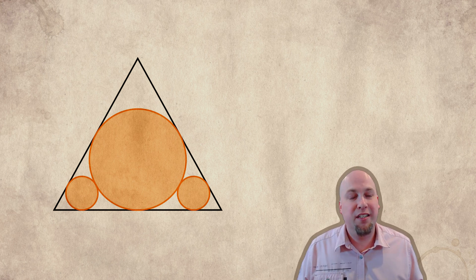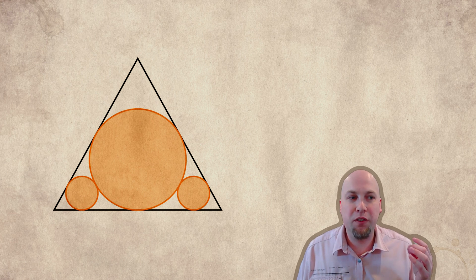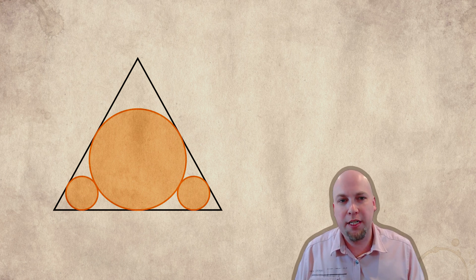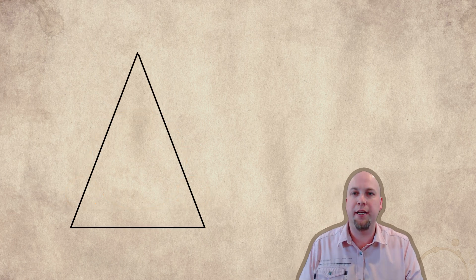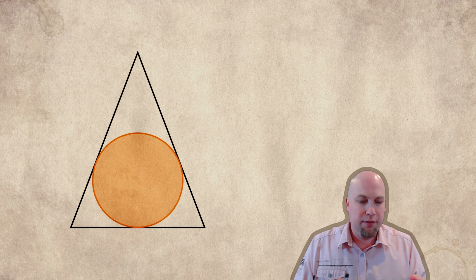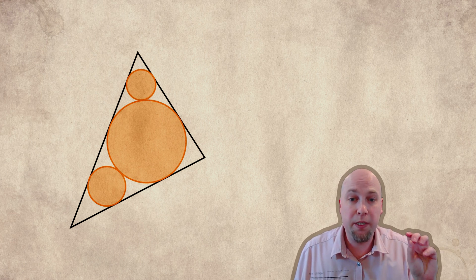And it turns out this greedy method here gives you the right answer no matter what triangle you're trying to do this with. It's not specific to equilateral triangles. So you can have a triangle that's isosceles or just any old scaling ugly triangle. It's still going to work. You just place your first circle as large as you can inside that triangle, then place your second circle as large as you can with the leftover space, and then third circle as large as you can with that leftover space, and you're always going to get the maximum amount of area covered by three circles inside that triangle.